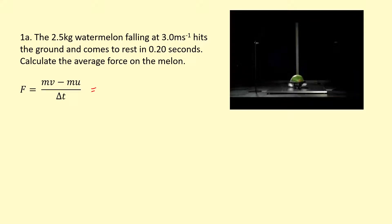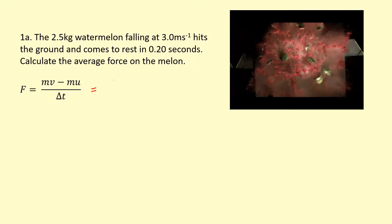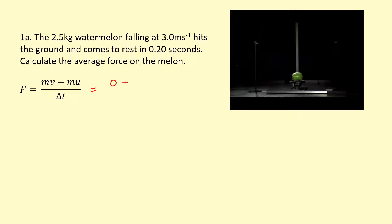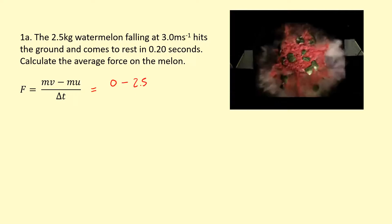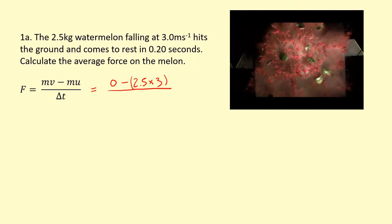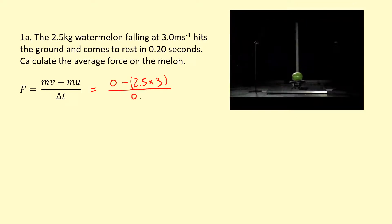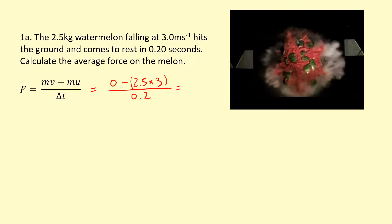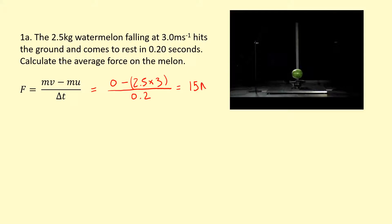So what's my final momentum? Well, it's coming to a rest, so the final momentum is going to be 0. Initial momentum is mass times initial velocity, divided by the time for the collision, which is 0.2 seconds, and that gives me a force of 15 Newtons. An average force of 15 Newtons, because it might have been changing, but that's the overall force.